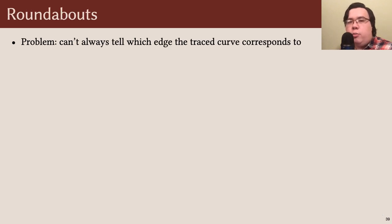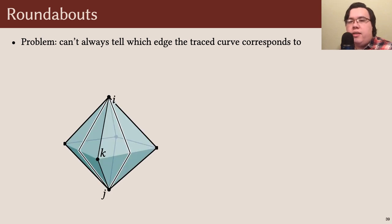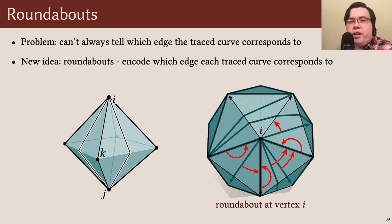Now, after tracing, there's still a problem. We don't know which edge of the other triangulation this curve corresponds to. Remember that we're working with delta complexes, so the endpoints of an edge don't determine it uniquely. If we trace out a curve between vertices i and j and the octahedron, for example, we can't immediately tell which of the two highlighted edges it corresponds to. To solve this problem, we introduce some new data, which we call roundabouts, at vertices. These encode which edge each trace curve corresponds to by recording the cyclic ordering of edges around each vertex. And again, these are easy to update following an edge flip.